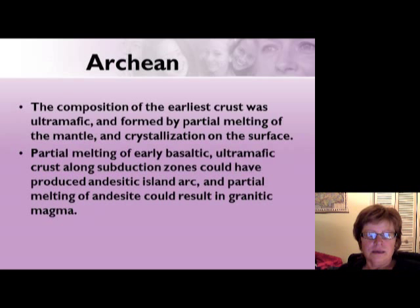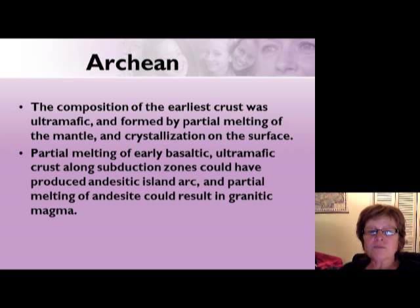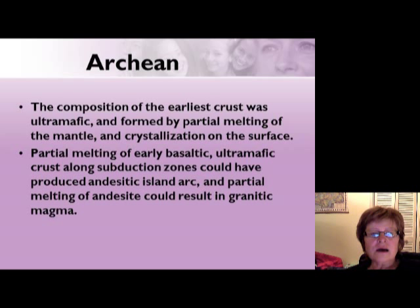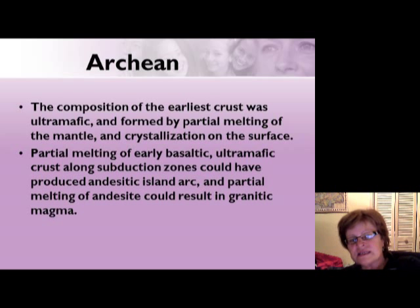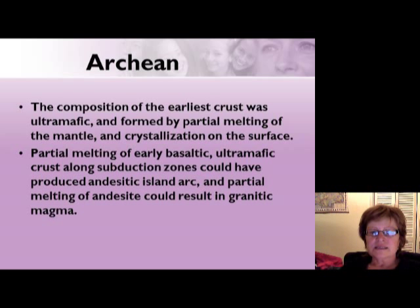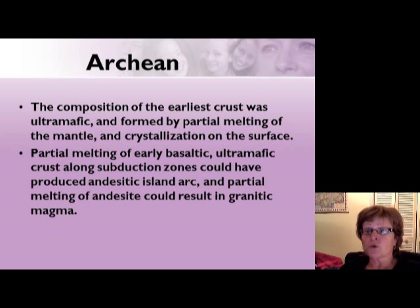The composition of the earliest crust must have been ultramafic to mafic, formed by the partial melting of the mantle and crystallization on the surface. Partial melting of the earliest basaltic ultramafic crust along subduction zones could have produced the earliest island arcs, and partial melting of the underside could have resulted in granitic magma. Granitic — or felsic — magma is more than 65% SiO2 and contains much more complex silicate structures than ultramafic compositions.